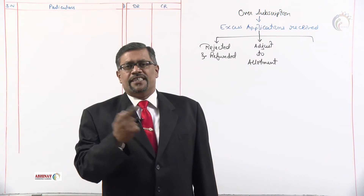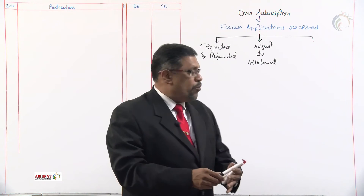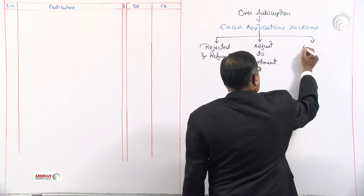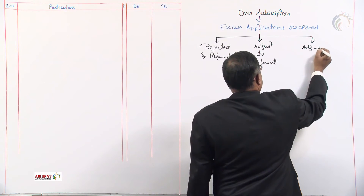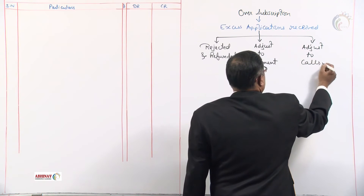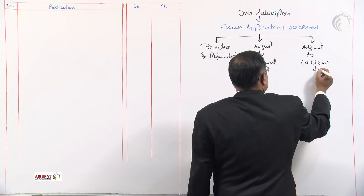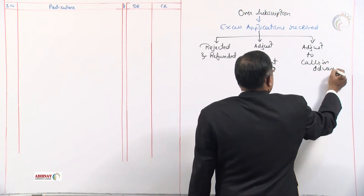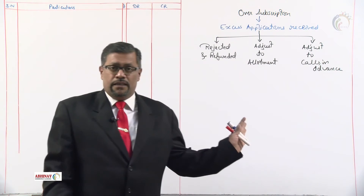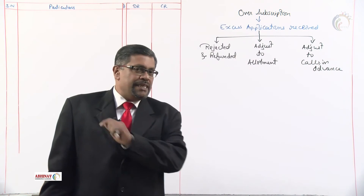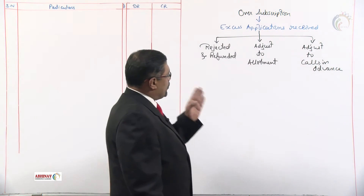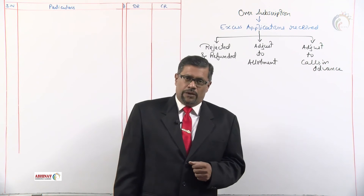One more option: we can show the excess application money as adjusted to calls in advance. It depends upon the problem — whether it should be refunded, adjusted to allotment, or adjusted to calls in advance.